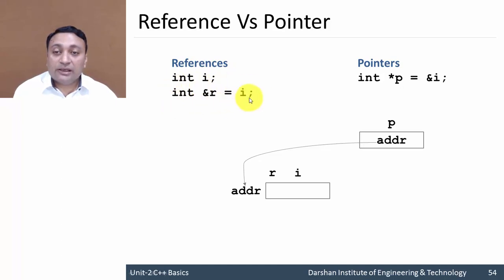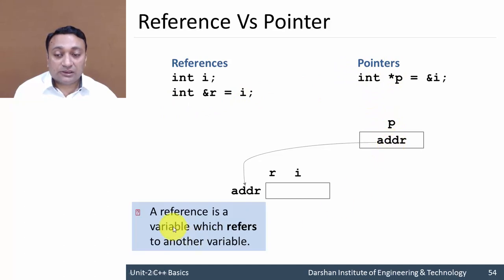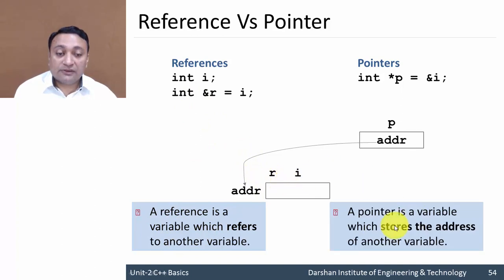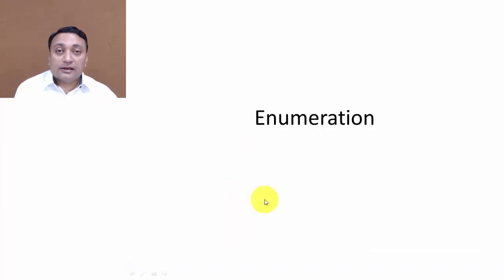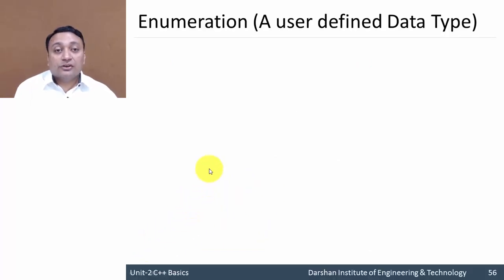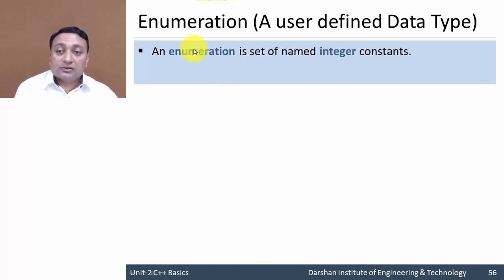So in summary: a reference does not allocate separate memory, while a pointer does allocate separate memory. A reference is a variable which refers to another variable, while a pointer is a variable which stores the address of another variable and points to it.